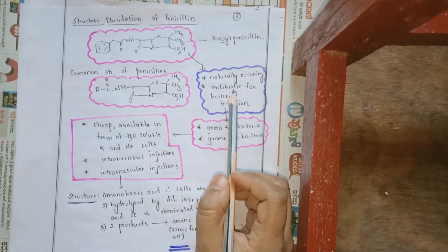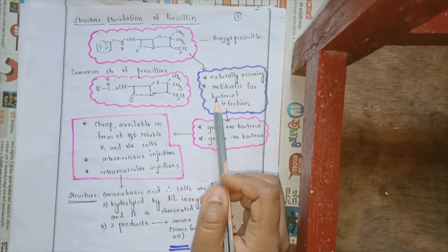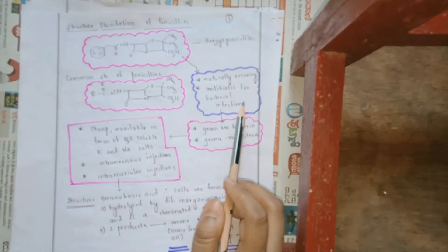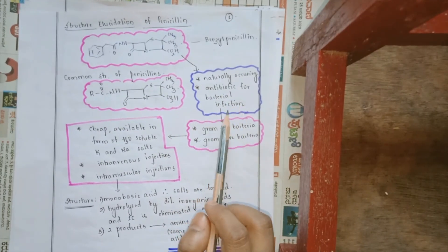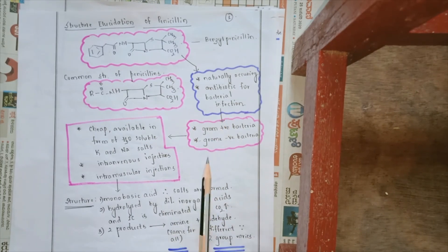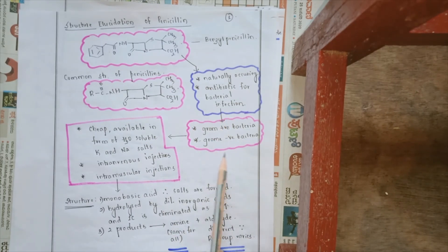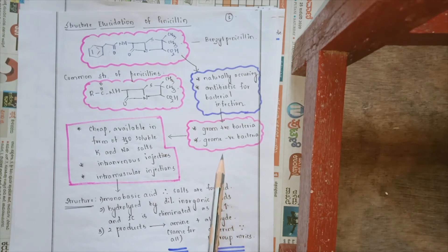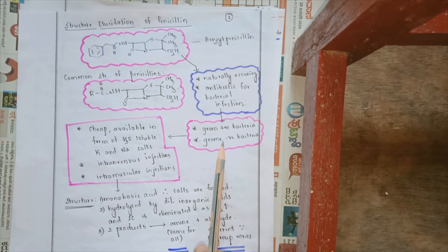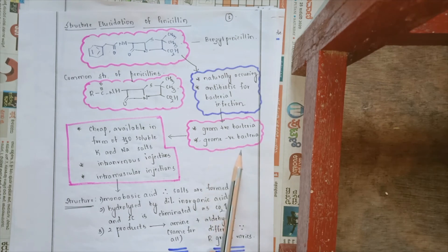Benzyl penicillin is naturally occurring. It is an antibiotic for bacterial infection. It is active against gram-positive bacteria and gram-negative bacteria. More specifically, it is active with most gram-positive bacteria and few gram-negative bacteria.